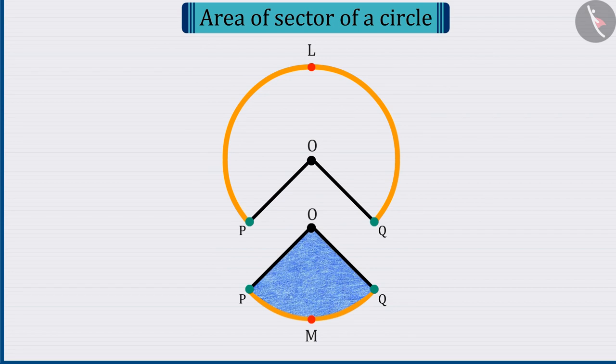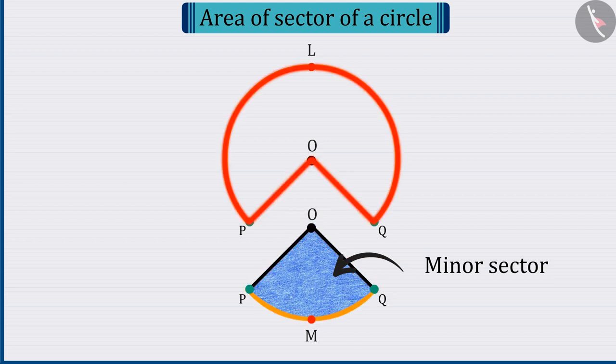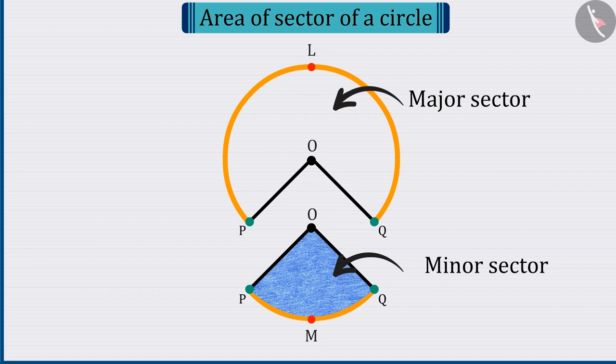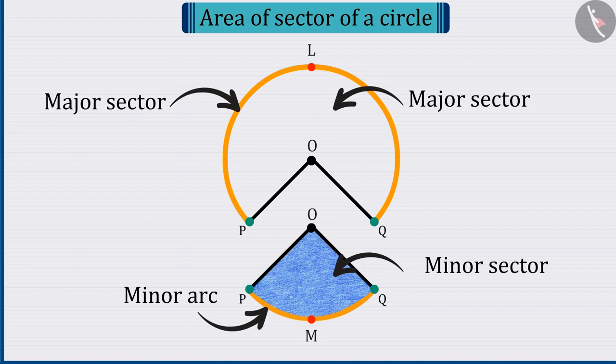Hence, in this circle, the area OPMQ is minor sector and the remaining circular region is major sector, where PMQ is the minor arc and PLQ is the major arc.